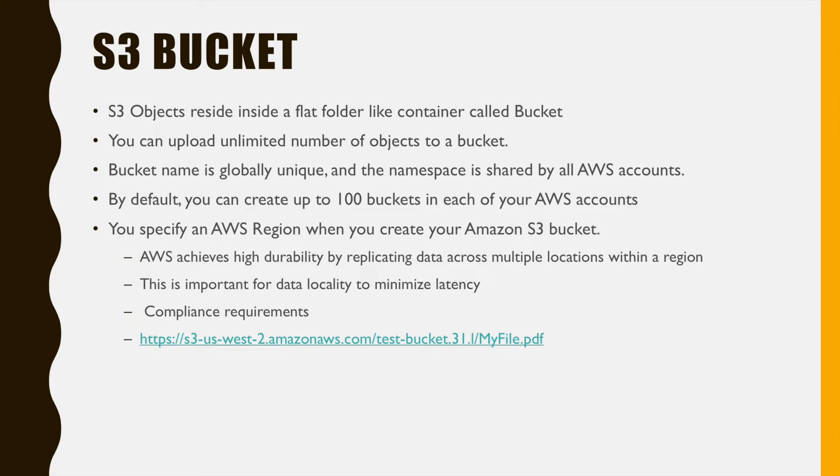Bucket names are globally unique, which means if I create a bucket with some name, you cannot create another bucket with the same name — it is similar to domain names like google.com. Nobody else can use it. The default upper limit is 100 buckets per account, and you need to contact AWS to increase it. Since one bucket can hold unlimited objects, you usually end up creating one bucket per environment.